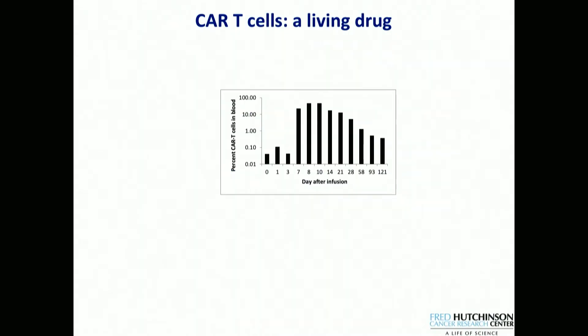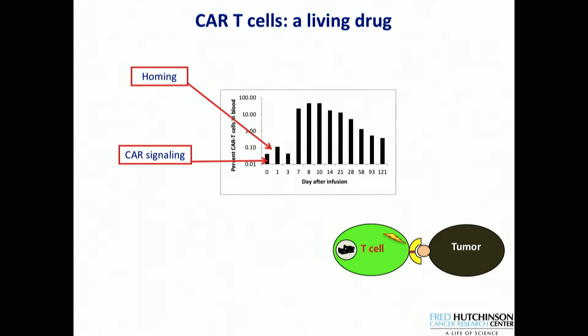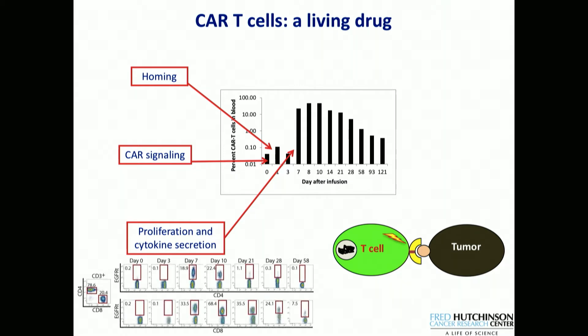The important concept is that this is a living drug — one dose of a therapy that we hope persists. Measuring CAR T-cells in the blood with that EGFR tag, you can look at the percentage of lymphocytes in the blood. The cells home to tumor, the CAR signals the T-cells when it engages the tumor, leading to proliferation and cytokine secretion, and you can see the cells go up to almost 100% of the lymphocytes in the blood. This is flow cytometry looking for the EGFR tag on CD4 and CD8 cells.